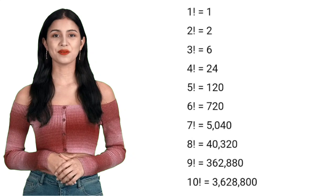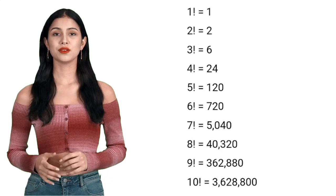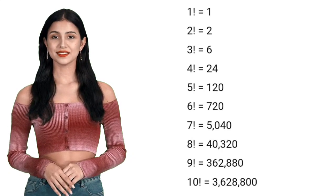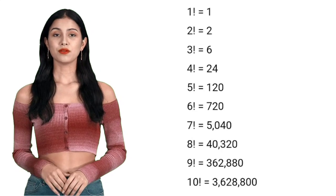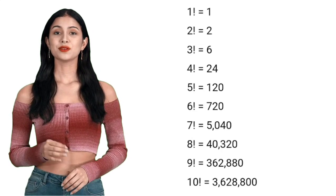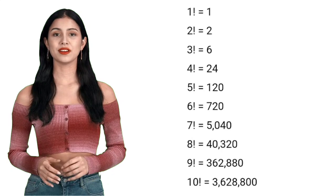Let's check the factorial values step by step. 1 factorial equals 1, 2 factorial equals 2, 3 factorial equals 6, 4 factorial equals 24, 5 factorial equals 120, 6 factorial equals 720.